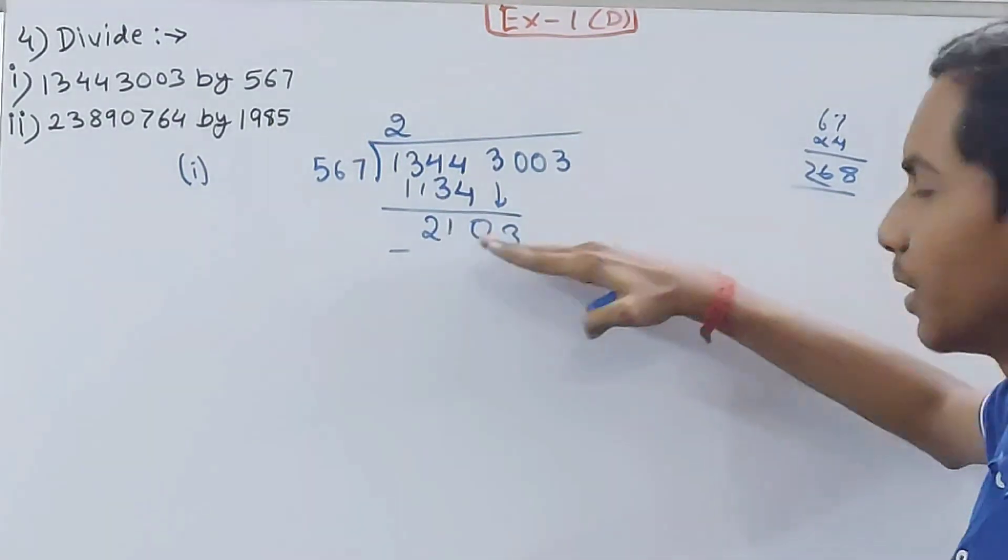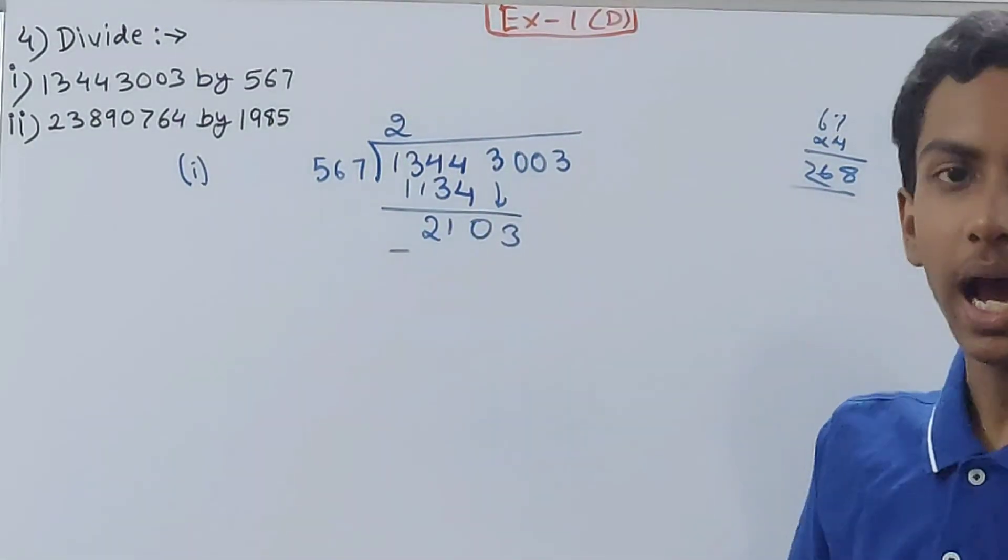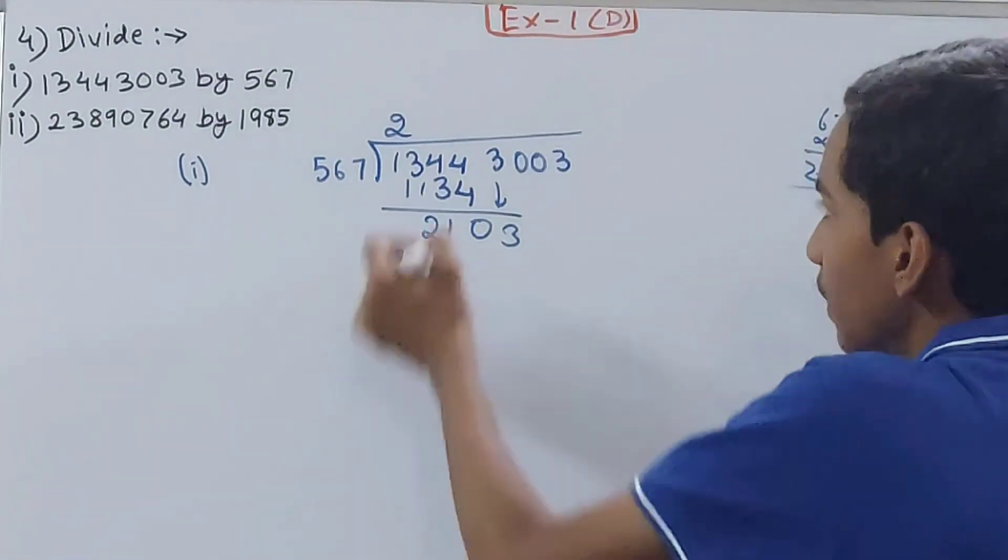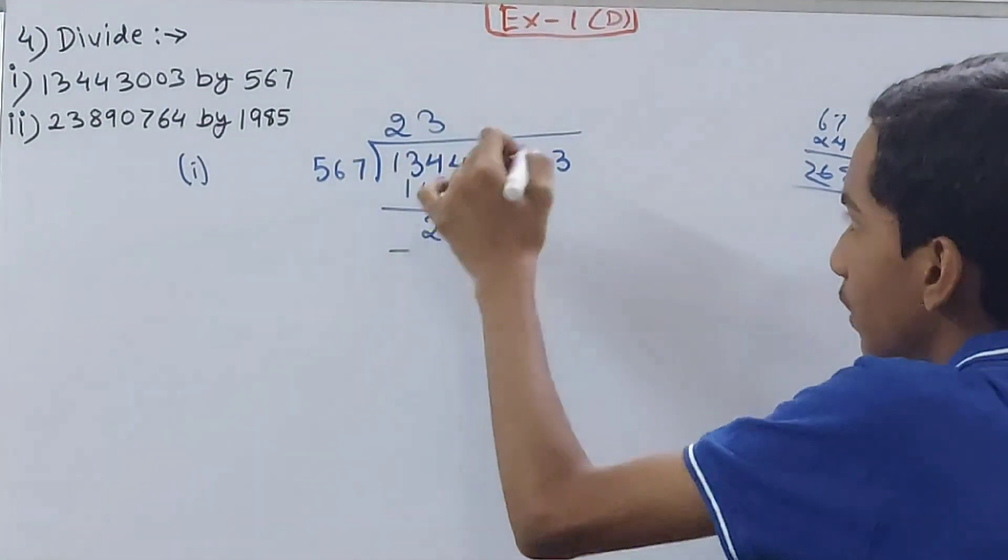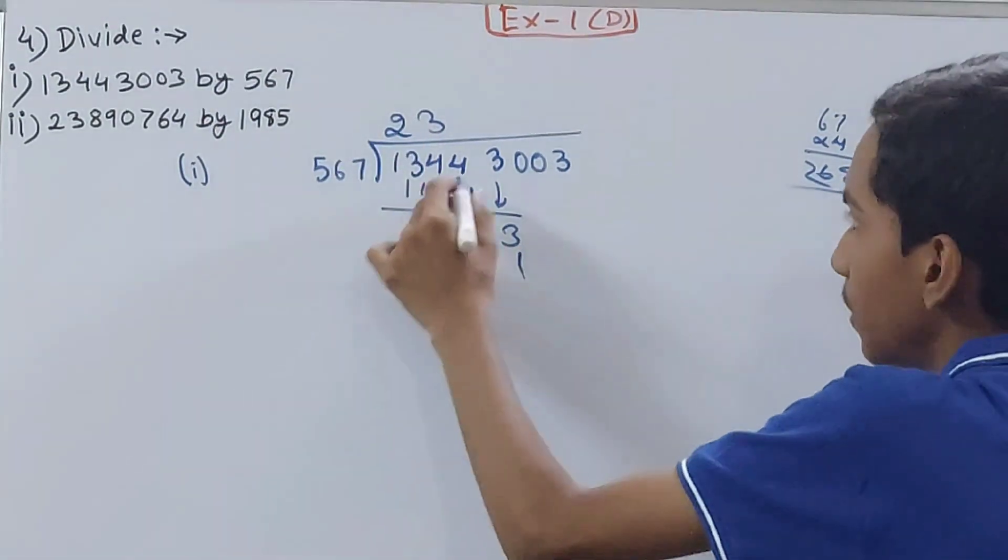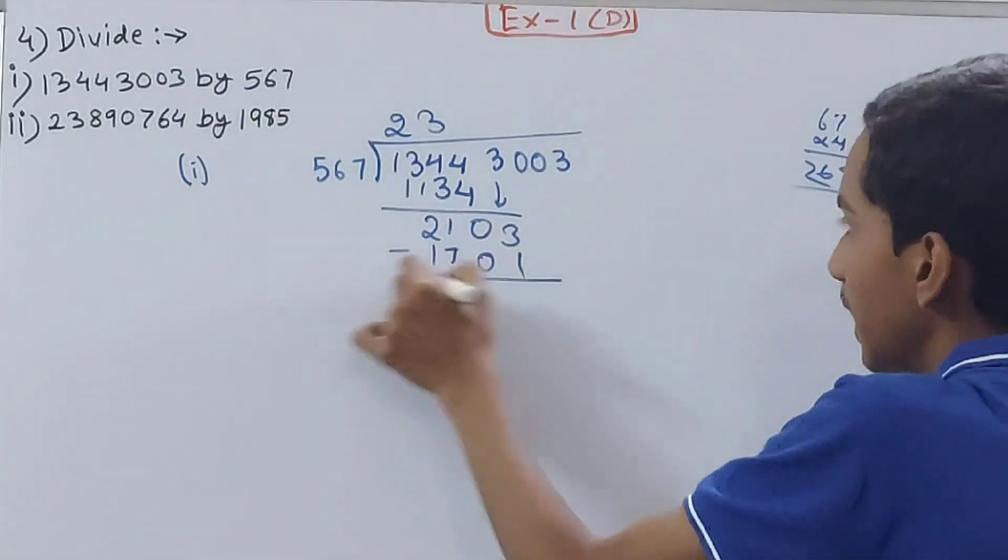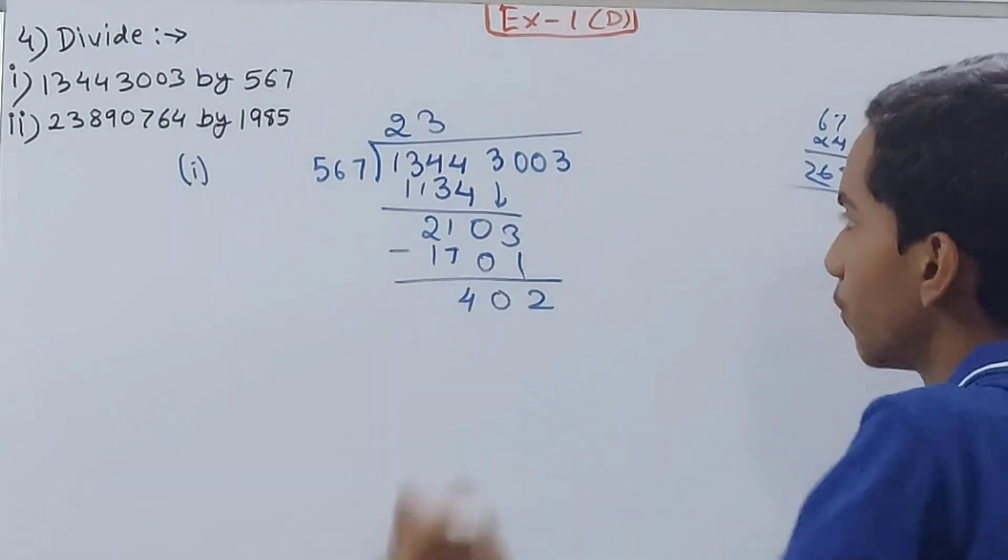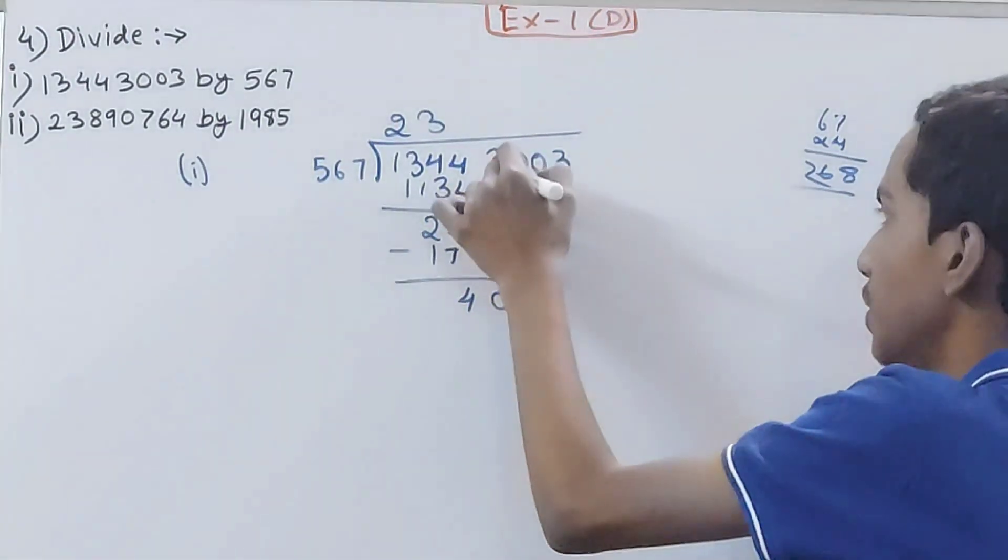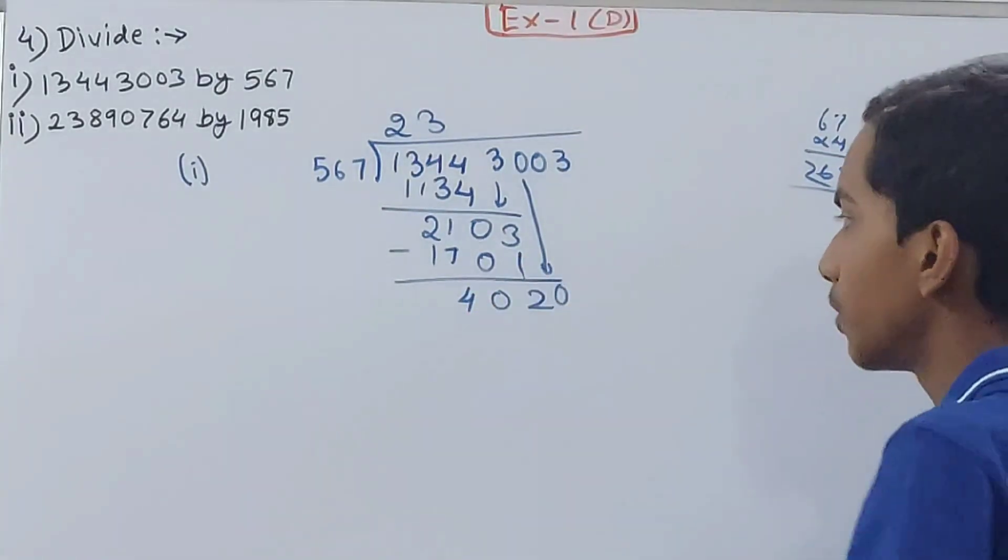500 times 4 is 2000, 67 times 4 is 268, so we'll get 2268, which is more. But I need less than that, so I will go with 3. Now 7 times 3 is 21, 2 carried over, 6 times 3 is 18 and 2 is 20, and 2 there, so 5 and 1 is 17. 2 here, 0, 11 minus 7 is 4.